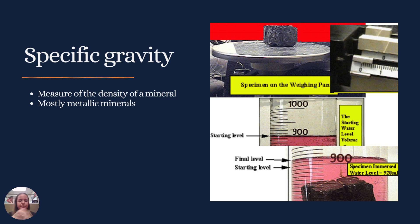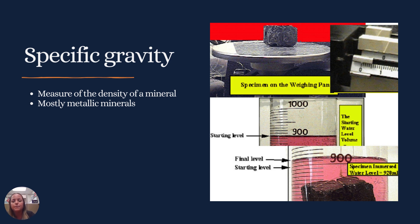Then we have specific gravity, which is basically the density of a mineral. Density is mass over volume — you need to weigh the specimen and then look at the displacement of the water level, which gives you the volume it takes up. From that you can get an actual density in grams per cc. This tells you basically how heavy the mineral is — if it's heavier, it's probably got a lot of metallic elements in it.